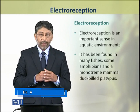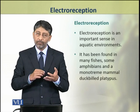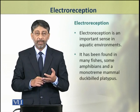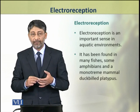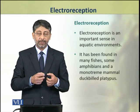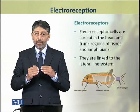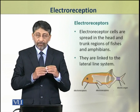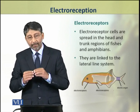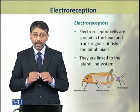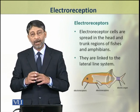This sense is found in many fish, amphibians, and other animals. In mammals, an aquatic mammal which is the duckbill or platypus is also capable of electroreception. Electroreceptors, which carry out electroreception, are spread in the head and trunk regions of fishes.